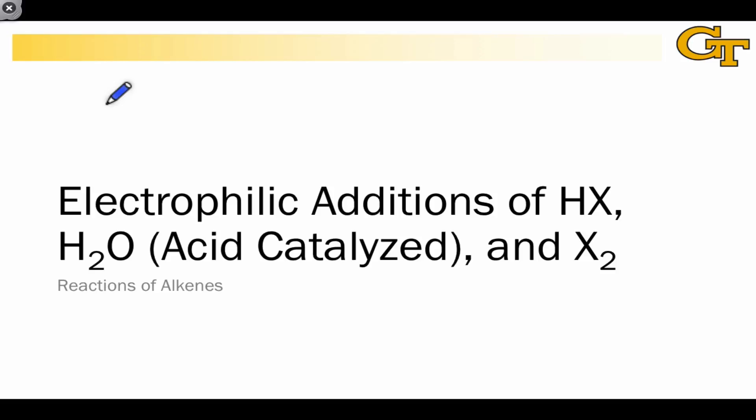The three types of electrophiles we're going to focus on in this lesson are the hydrohalic acids HX, hydronium ion H3O+, and the elemental halogens X2. In the first two cases, we can recognize very clearly significant partial positive charge on the hydrogen atom in these structures. This makes the hydrogen a key electron acceptor in these species.